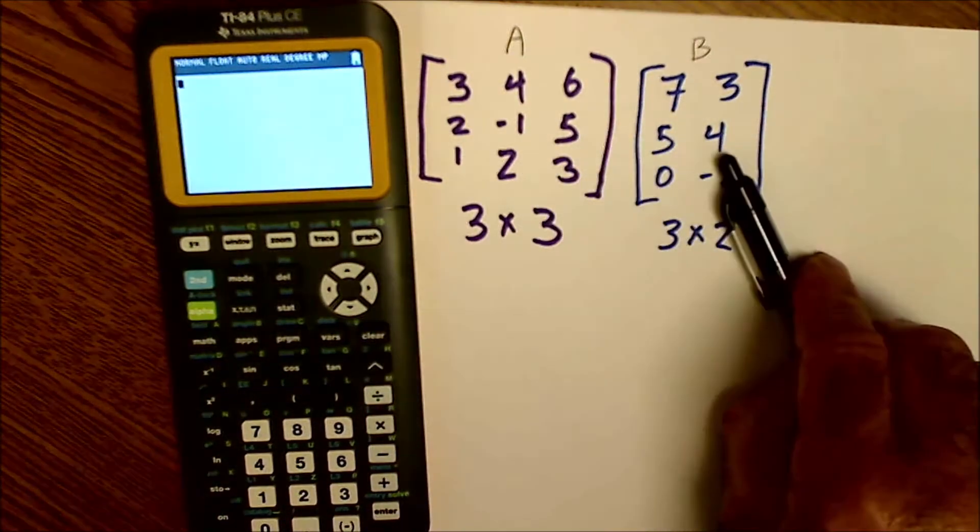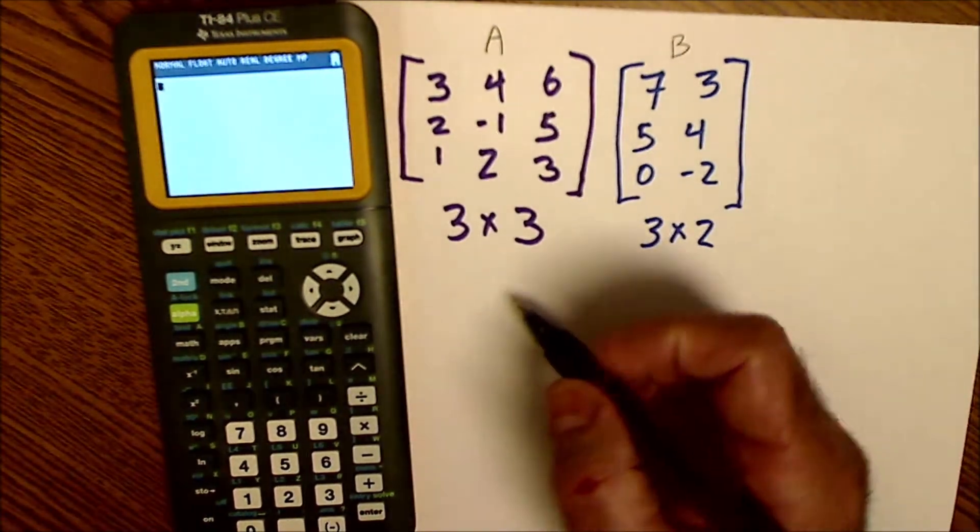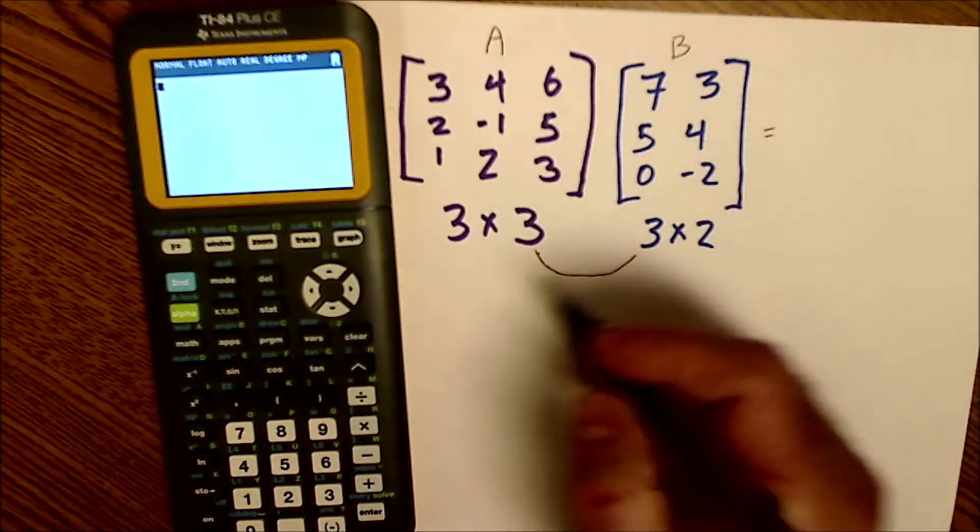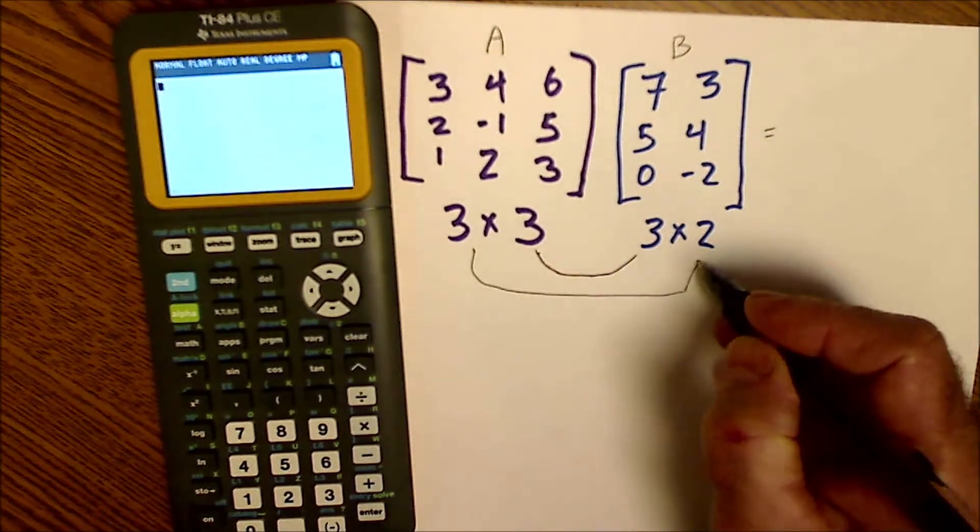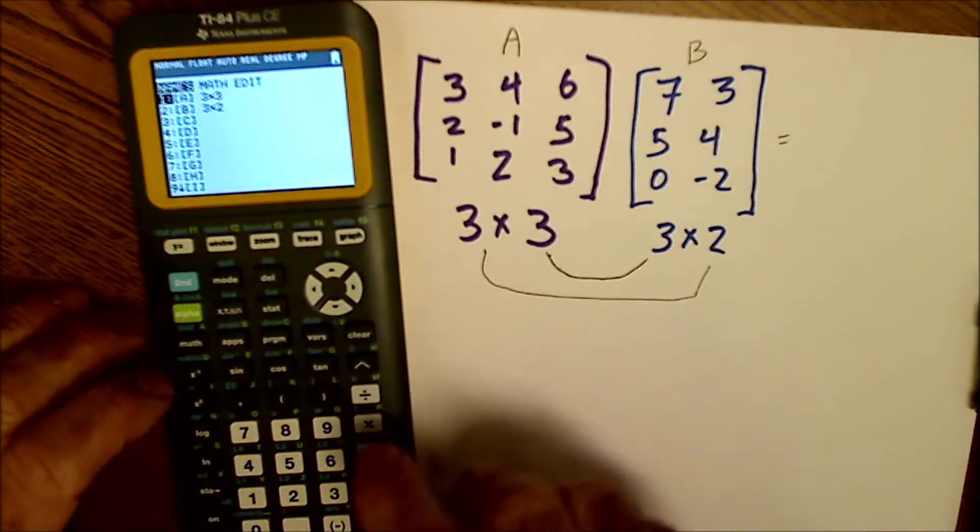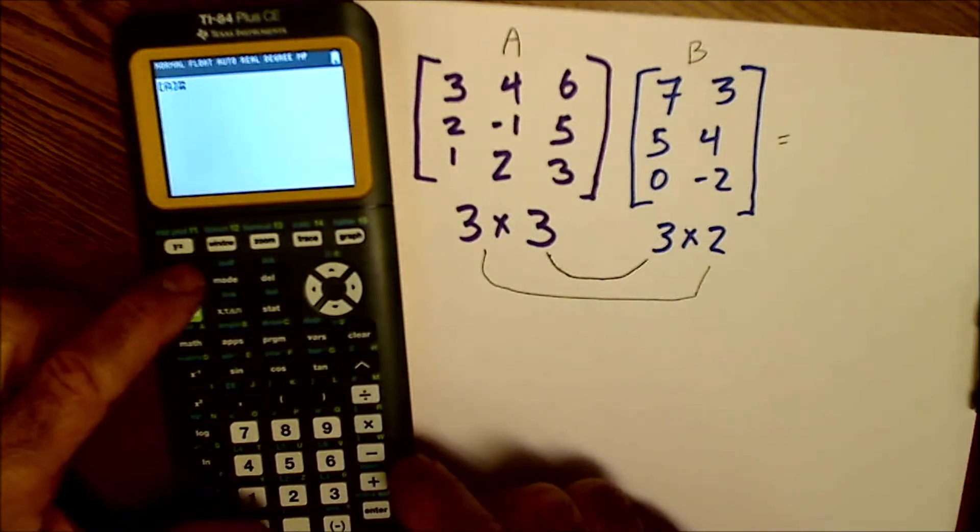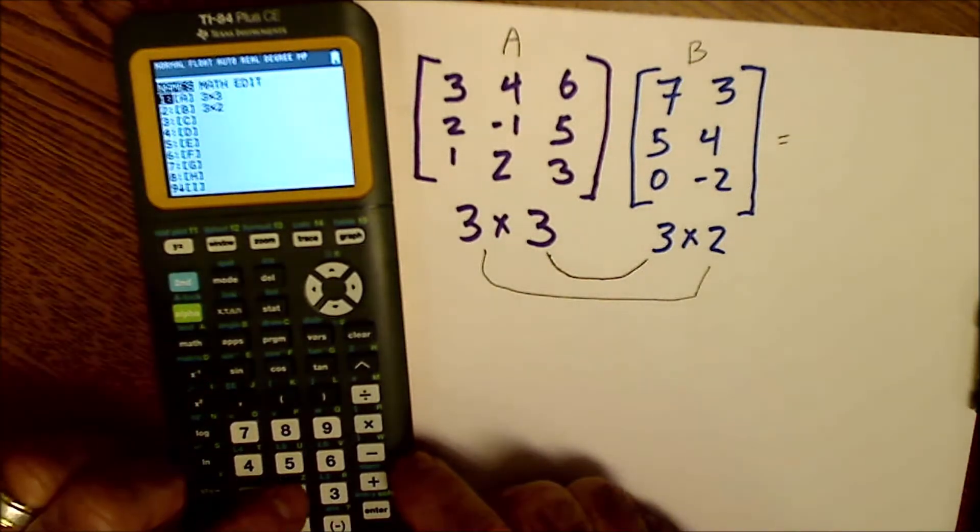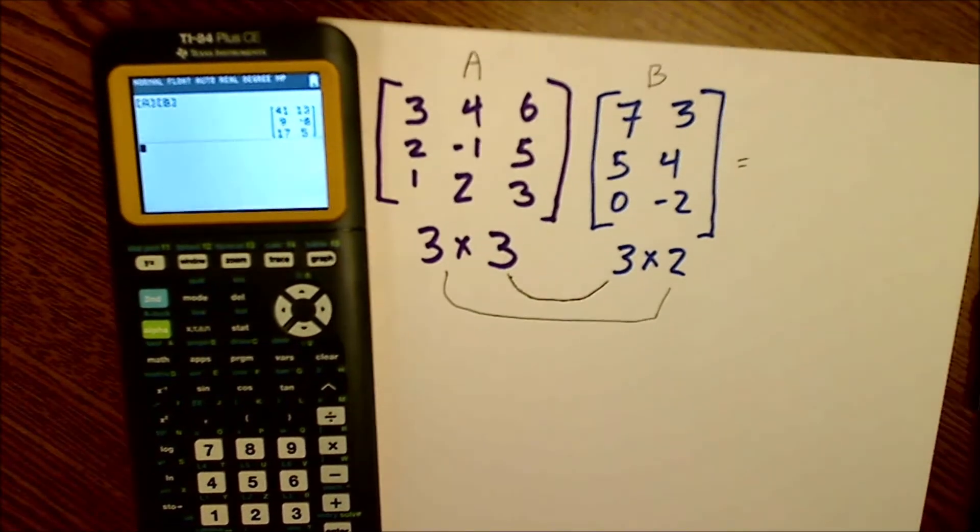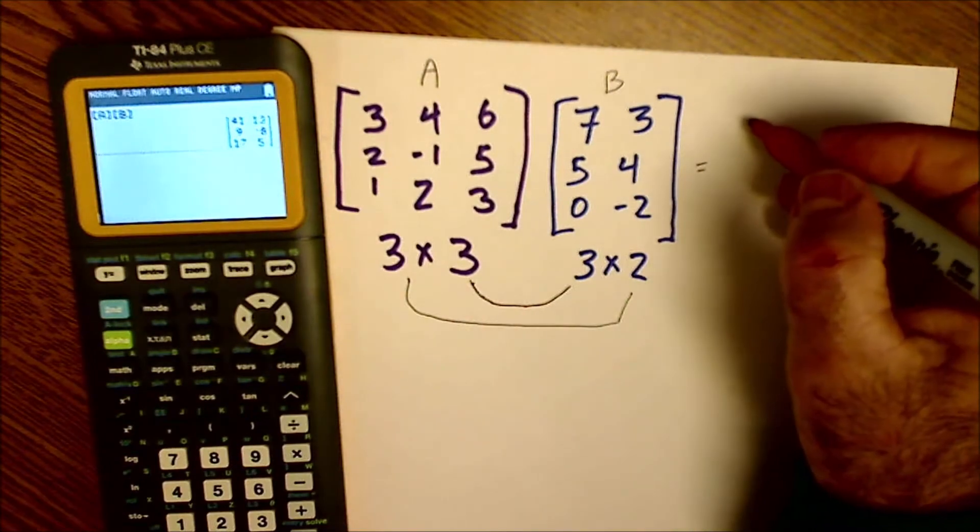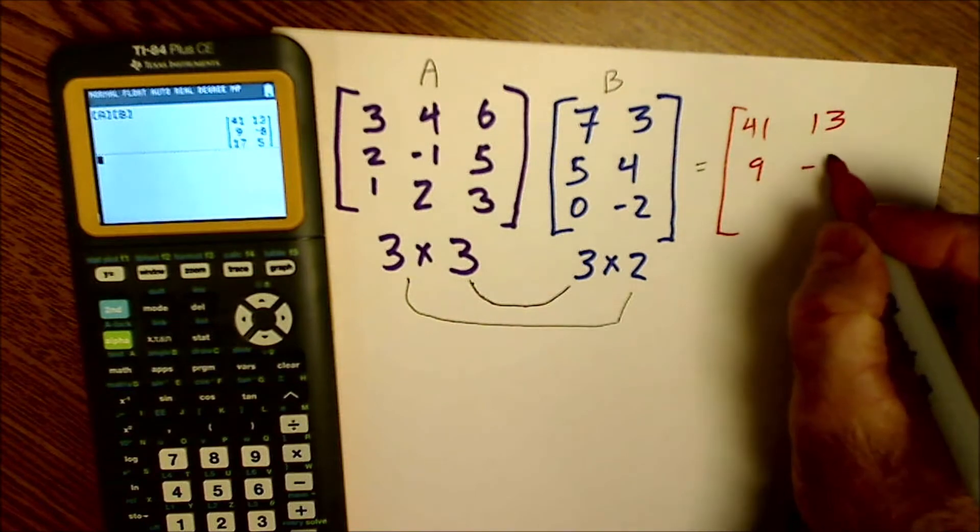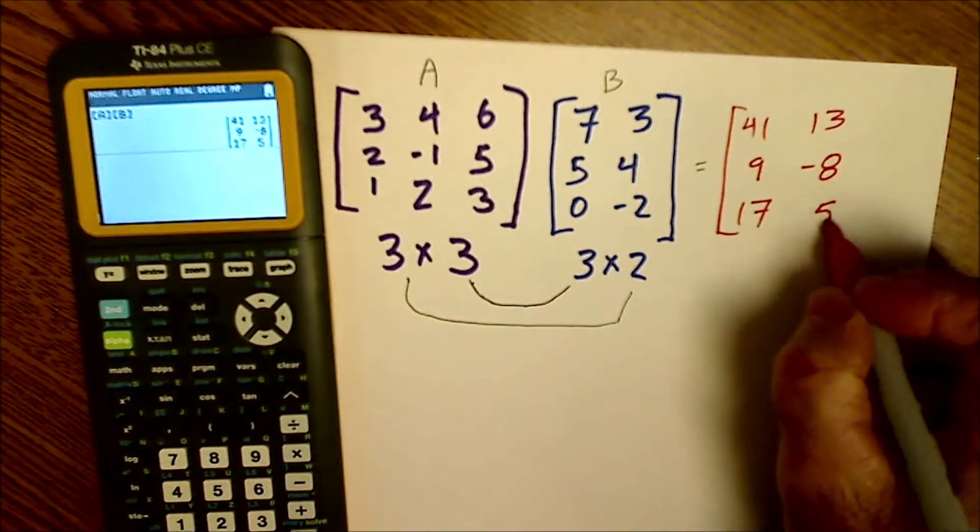So let me clear. Let's say I want to do A times B. Well, the first question is, can I multiply them? These are the same, so the answer is yes. Then my solution will be these dimensions here, three by two. So I'm going to go back to matrix. I'm going to select matrix A, number one. And then I'm going to go back to matrix and I'm going to select matrix B. So I have A times B. I hit enter. And it multiplies these two matrices together and gives me a three by two matrix where the elements are 41, 13, 9, negative 8, 17, 5.